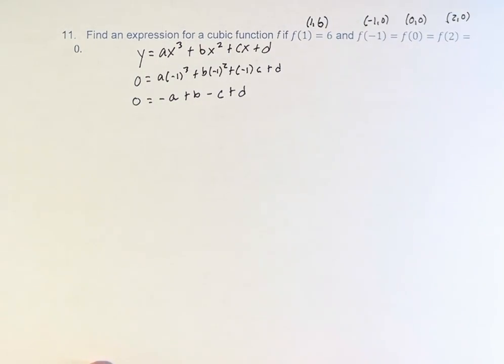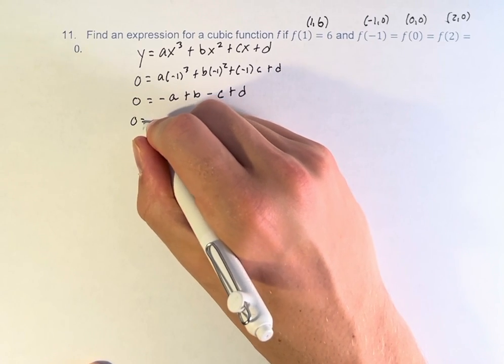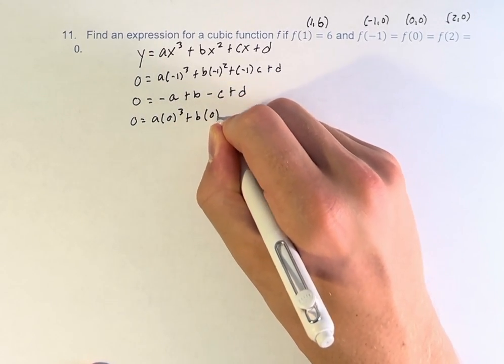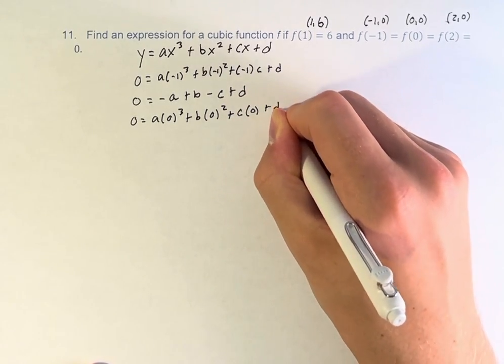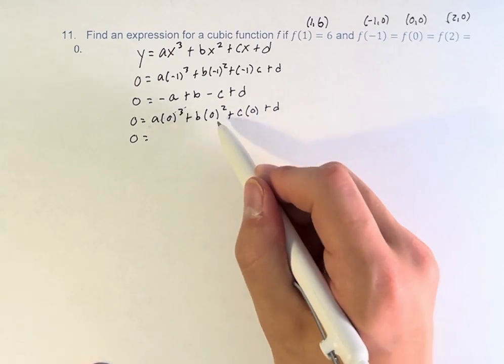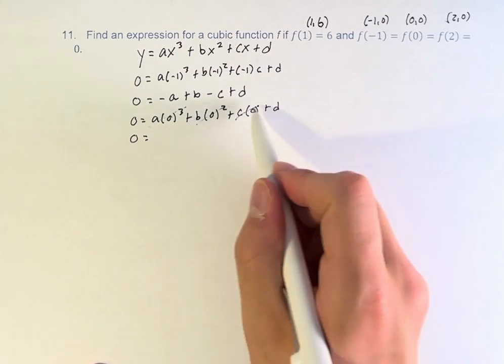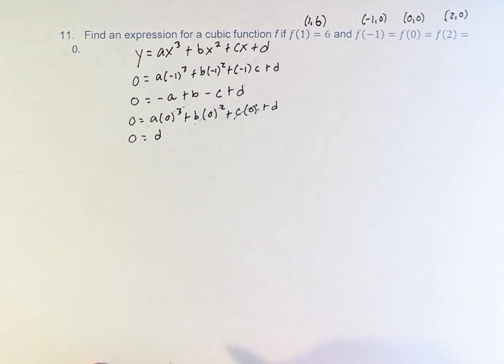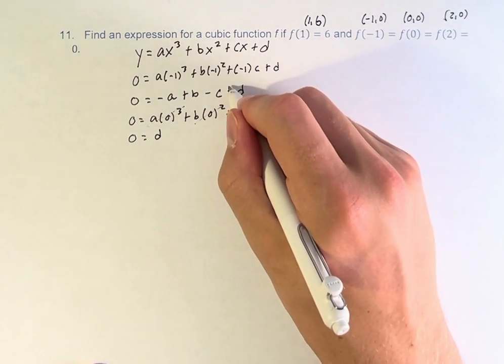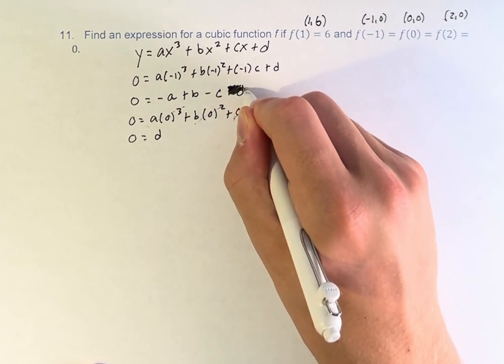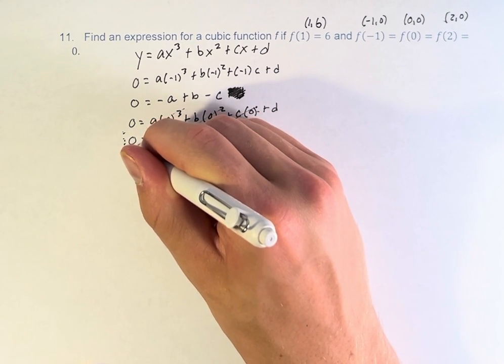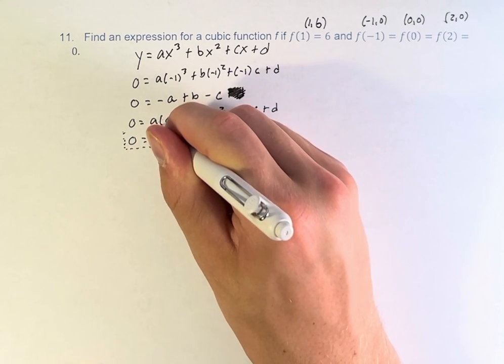f of 0 is 0, so therefore 0 is equal to a times 0 cubed plus b times 0 squared plus c times 0 plus d. 0 is therefore equal to, this is 0, this is 0, this is 0, all of these cancel and we're just left with d. So therefore d is equal to 0, therefore we can eliminate it from here, and we now have solved for one of our constants.